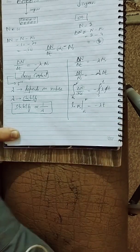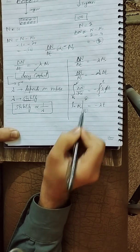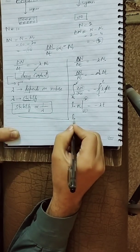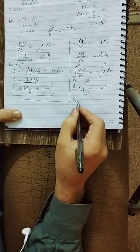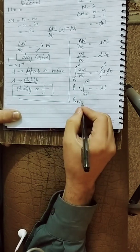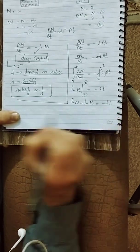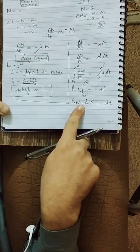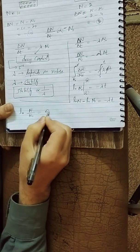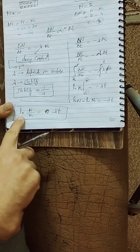Since the derivative and integration cancel each other, we apply the limits. Putting upper limit minus lower limit gives: ln(N) − ln(N₀) = −λt. Using the logarithm subtraction property, this becomes: ln(N/N₀) = −λt.